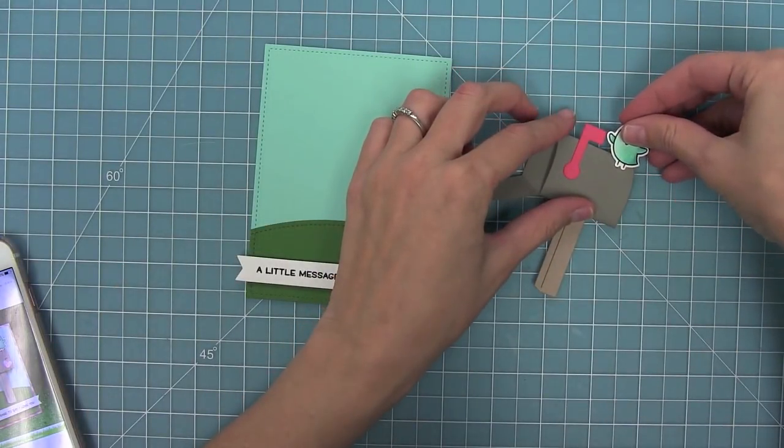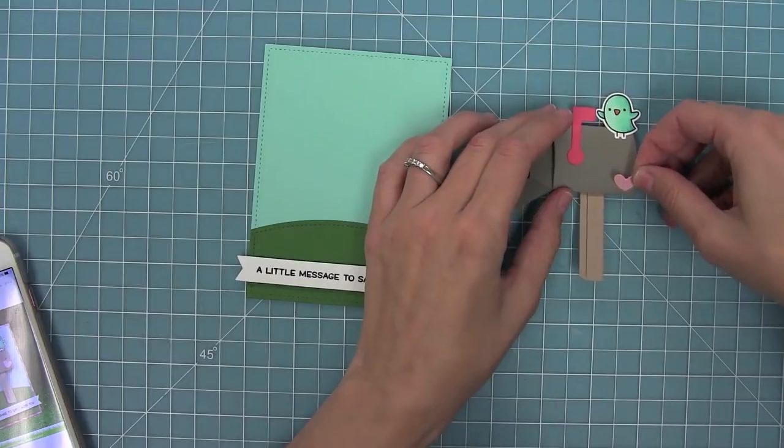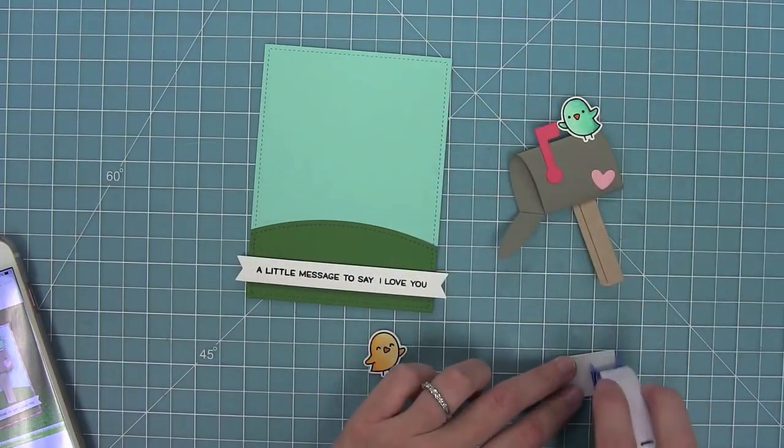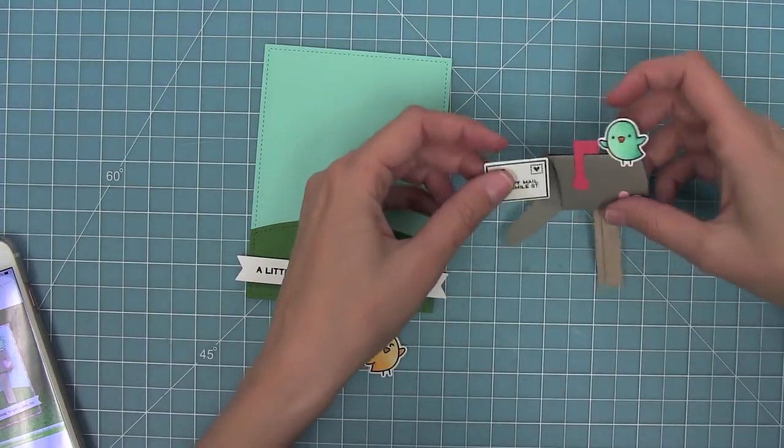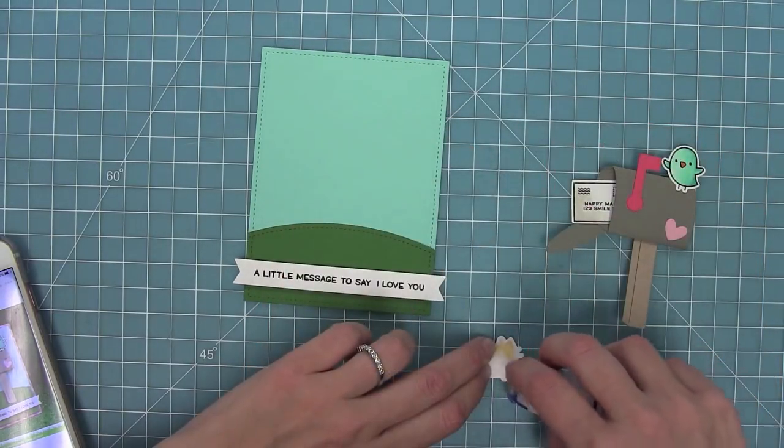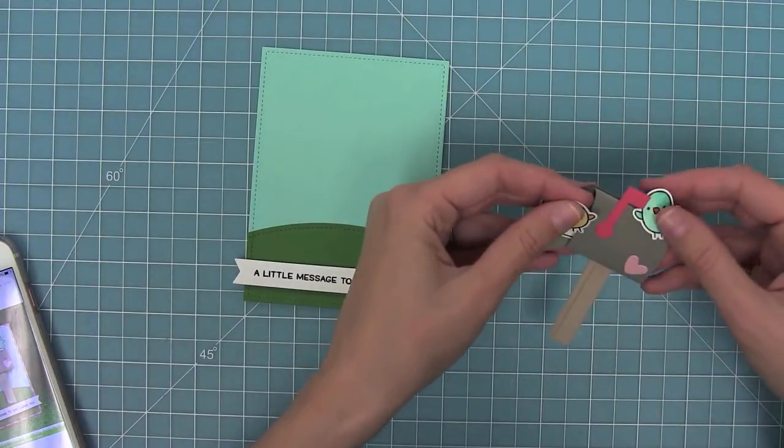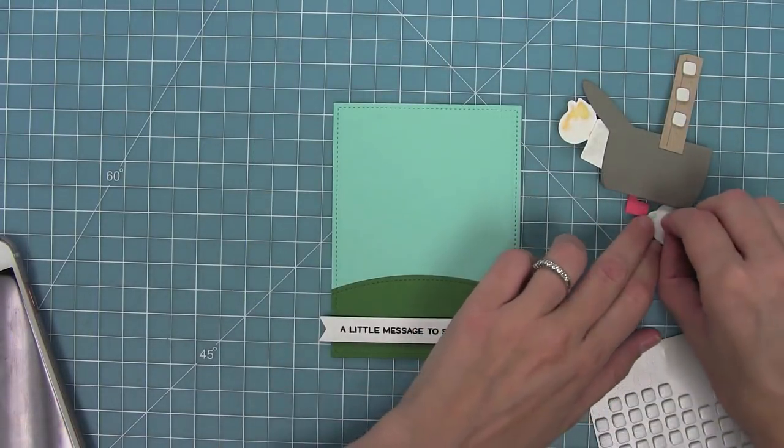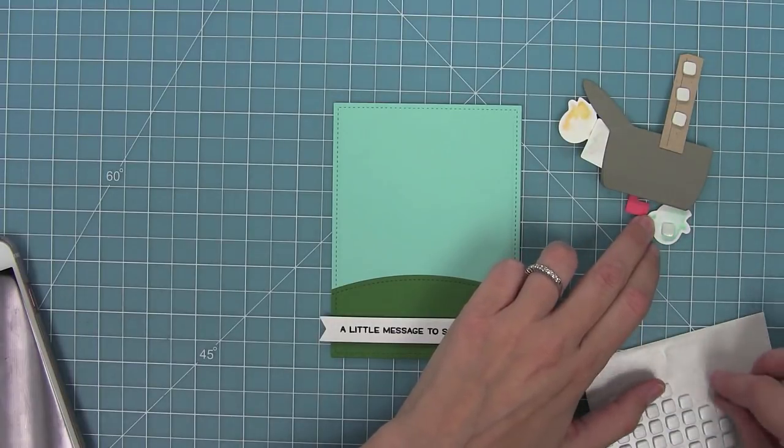Next I'm going to take some birds from the love letter stamp set and start adhering them to my mailbox. I've also die cut a little pink heart from the happy mail die set and layered that on to that mailbox. Then here I have a die cut happy mail envelope also from love letters. The love letters and happy mail go together perfectly. I'm going to tuck that into the mailbox and then add a cute little yellow bird.